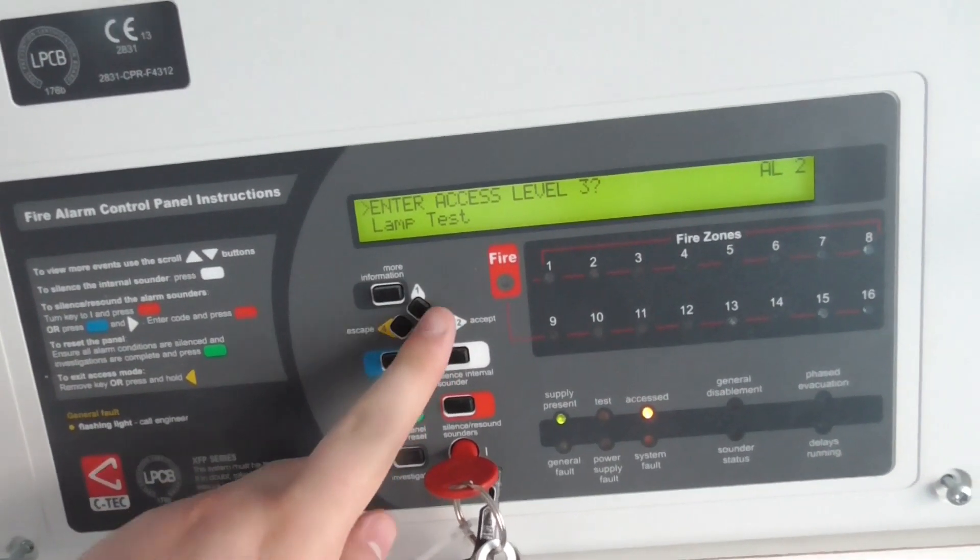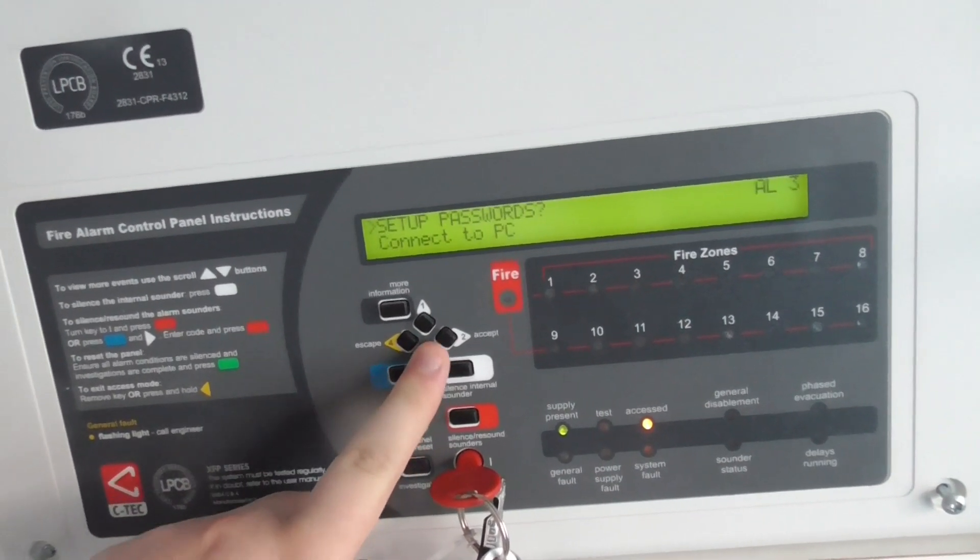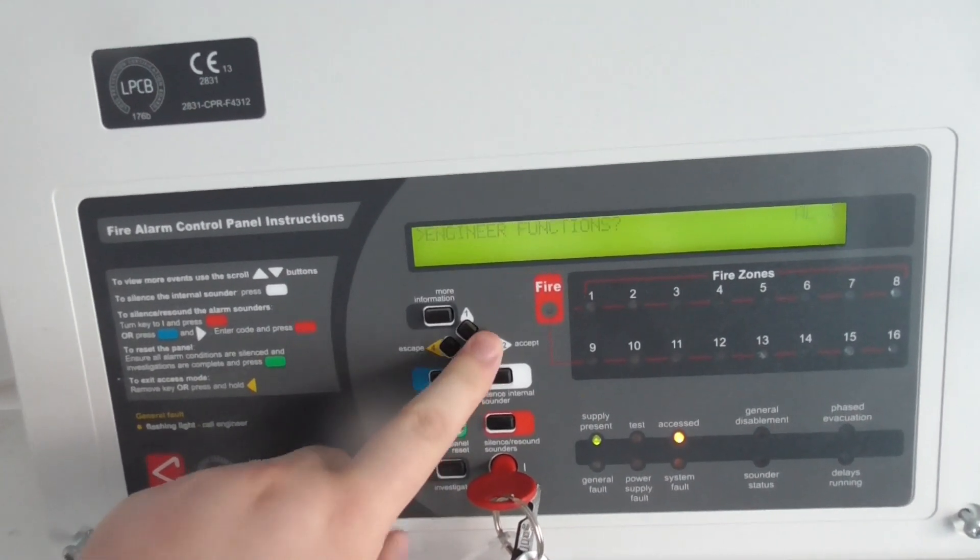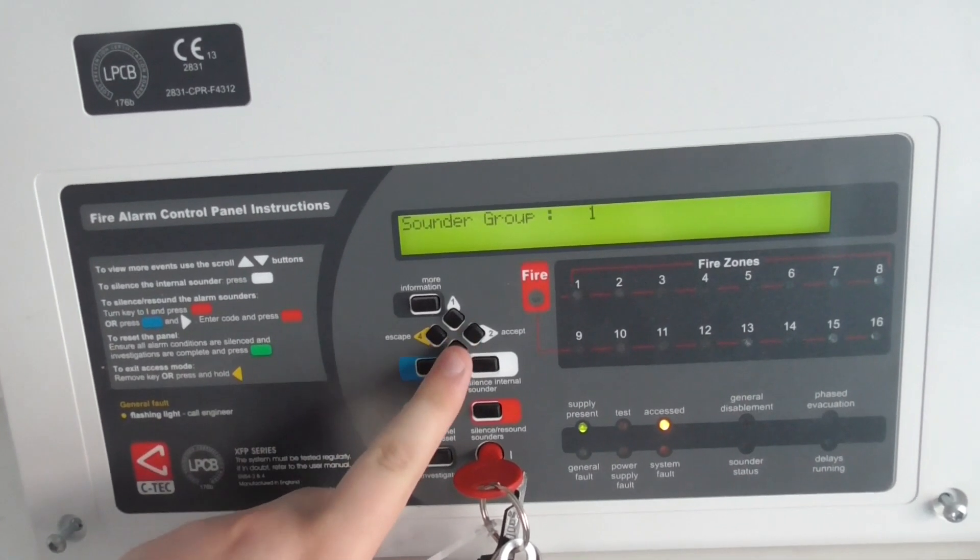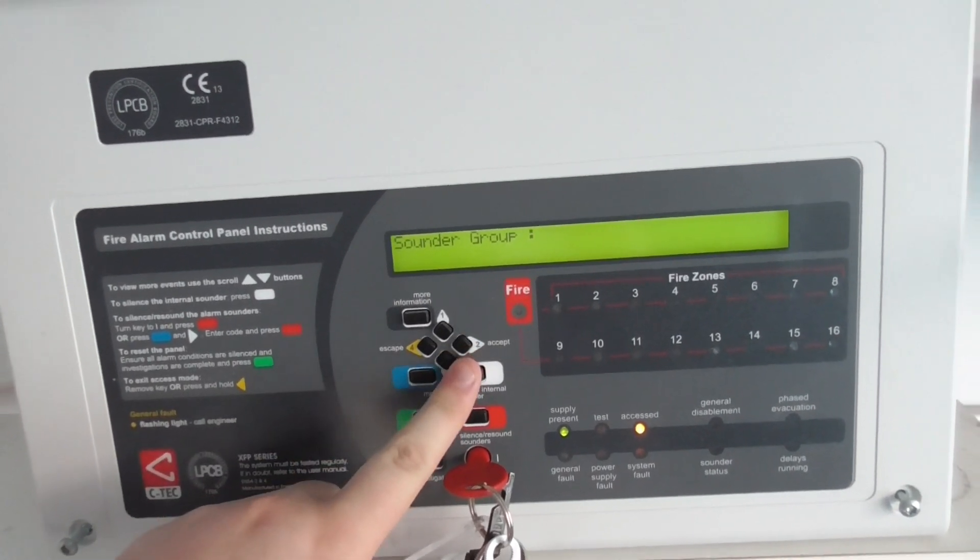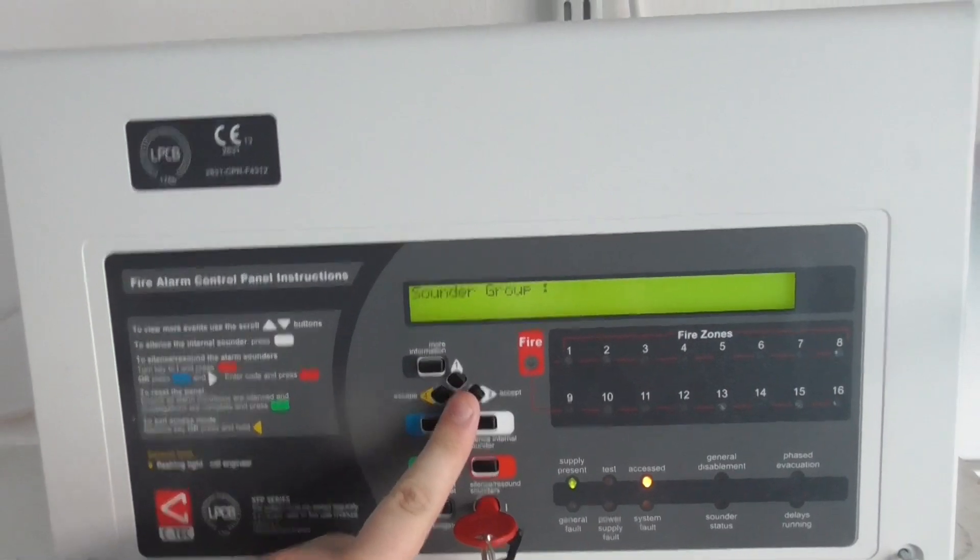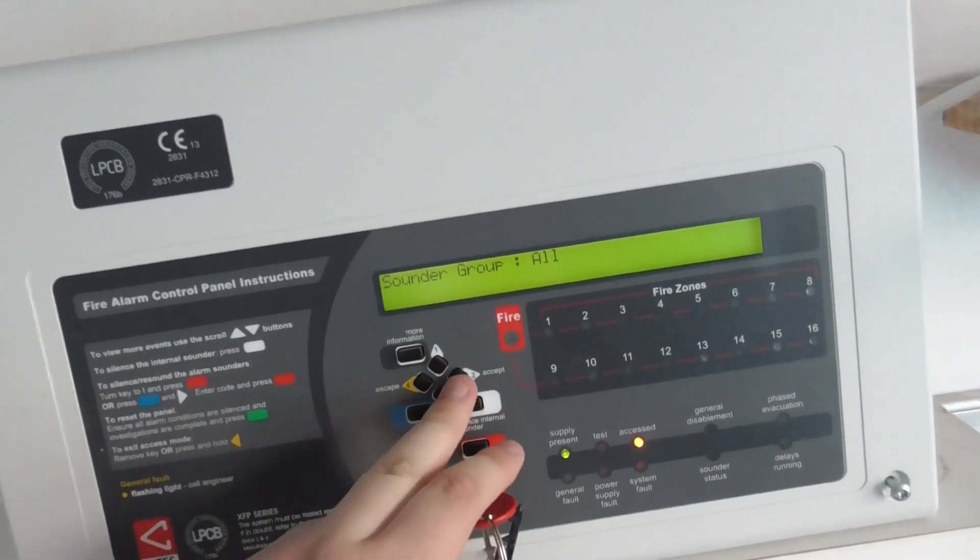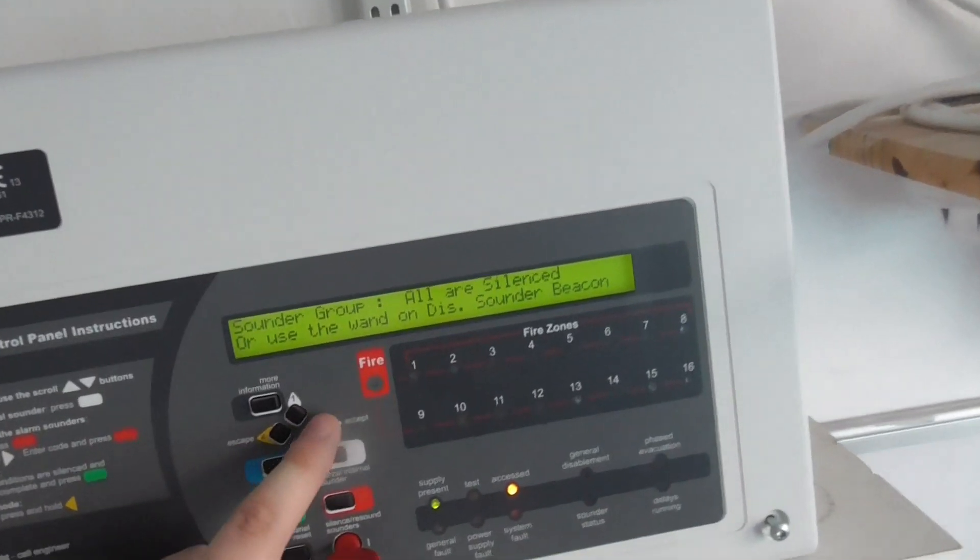We're going to put the system into alert. So engineer functions, sounder groups. And then we want all of them to go off because the expander sounders are on a separate group and we want the sounders in my bedroom to go off too. So we set it to all.